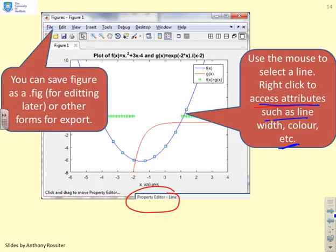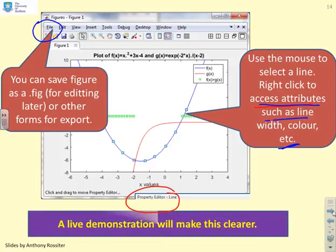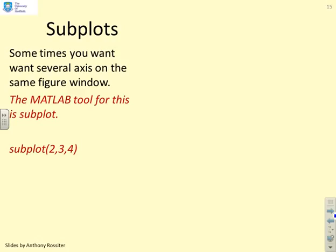If you want to save the figure as a .fig file for later editing in MATLAB, go to the File button and save it. The default format is .fig, and you can always reopen a .fig file and it will reappear exactly as when you plotted it, ready for further editing.